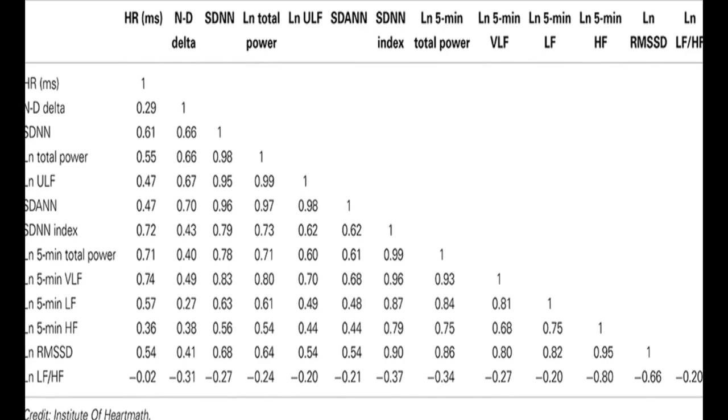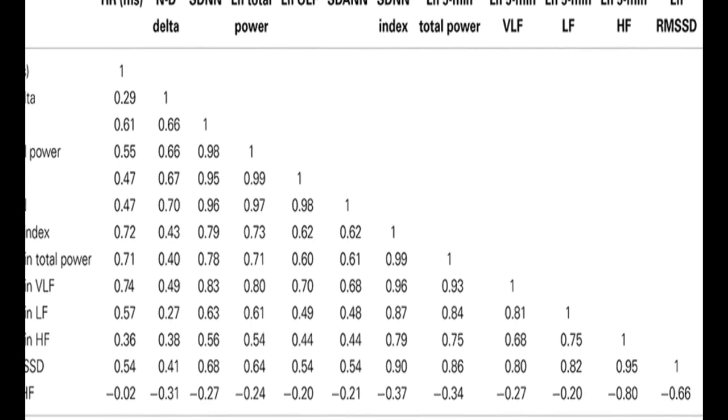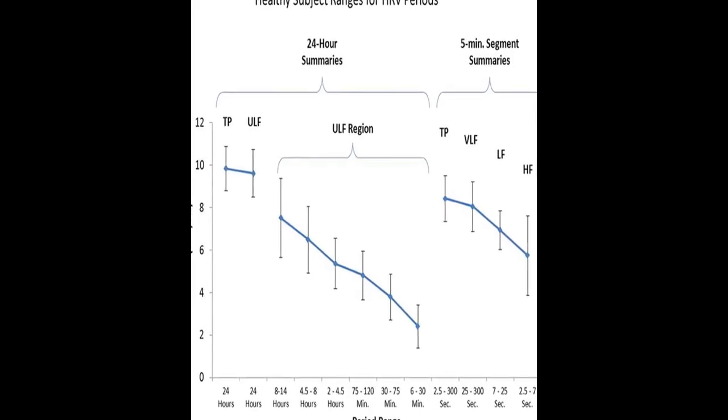It also discusses the intrinsic cardiac nervous system and the heart-brain connection, through which afferent information can influence activity in the subcortical and frontocortical areas and motor cortex.